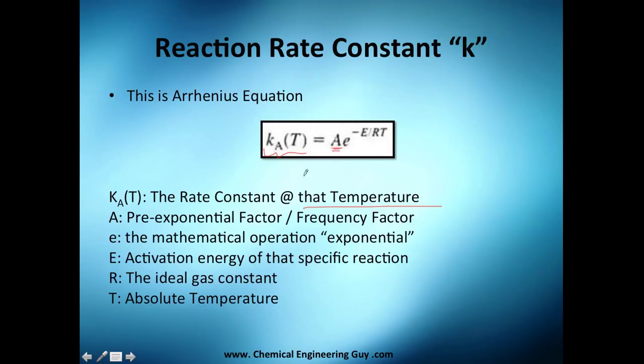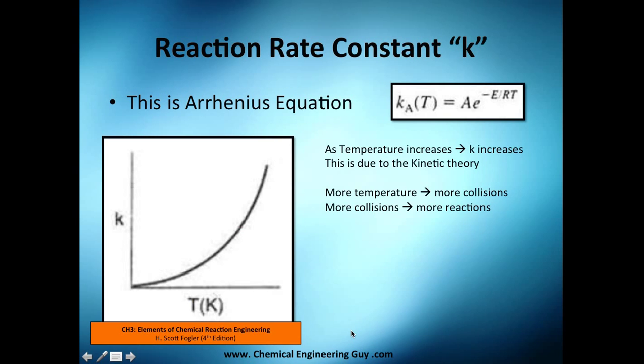This e here is the mathematical operation for the exponential - I mean this is similar to the natural logarithm, actually the reverse function. And this E here is the activation energy of that specific reaction, we're going to talk about it later. R, probably you're familiar, is the ideal gas constant, 8.314 joules per gram mole Kelvin. And this temperature is the absolute temperature guys, so Kelvin or if you're using Fahrenheit scale, just Rankine.